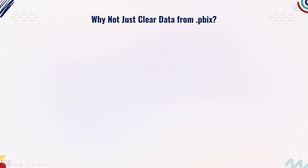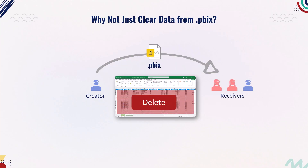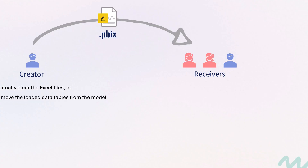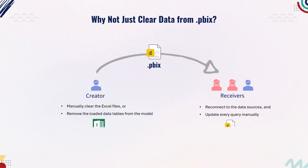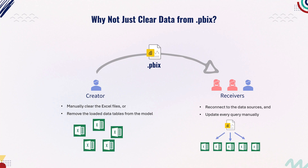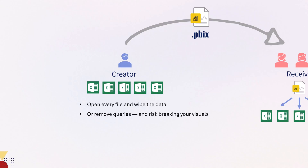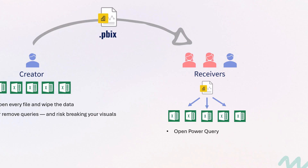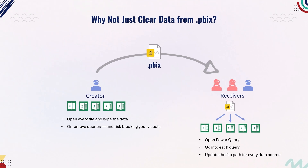Now some of you might wonder: why not just delete the data from the input sheets of a .pbix file and send that? Sounds simple, right? Let's break that down. If you want to share a .pbix without data, you'd need to manually clear the Excel files or remove the loaded data tables from the model. Then the receiver has to reconnect to the data sources and update every query individually. This might be manageable with one file, but imagine your report connects to 6, 10, or even 15 different Excel files stored in a folder. To share that .pbix, you'd have to open every file and wipe the data, or remove queries and risk breaking your visuals. Then the person receiving it would need to open Power Query, go into each query, and update the file path manually for every single data source. That's not only tedious, it's prone to human error.